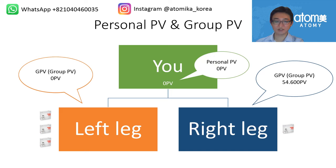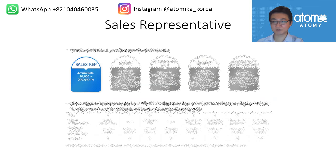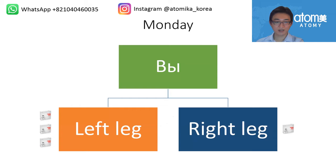In order to start earning money in Atomy, you need at least 10,000 PV. The first status — the first level of distribution — is sales representative. To become a sales representative, you need to accumulate 10,000 personal PV. After that, your group PV can be calculated and you can receive money from the company. Ten thousand PV is approximately twenty to thirty dollars worth of purchases.